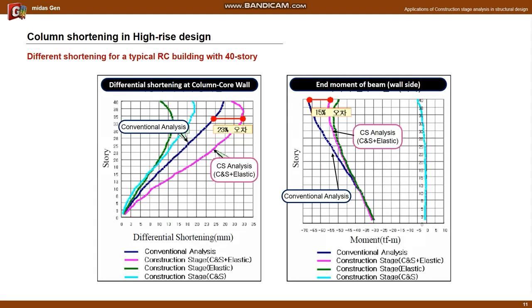I will introduce the shortenings of a typical RC building with 40 stories. As can be seen from the following graph, the differential shortening due to drying shrinkage and creep accounts for about 55% of the total amount. The conventional analysis shows an error of up to 23% in the differential shortening and up to 15% in the member force of the girder.